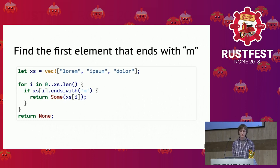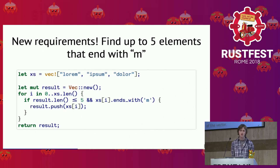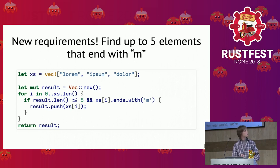This is simple enough and easy to read, but in the real world we're going to have new requirements. Imagine you're going into the office Monday morning and your boss tells you: now you need to find the first five elements that end with M. So you extend this piece of code — you add a mutable result, push items into it, and try to only go up to five elements. The if block is now pretty much twice the size, but in the end you return the result.